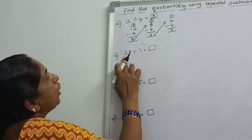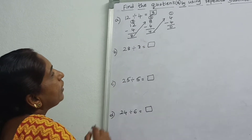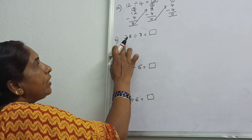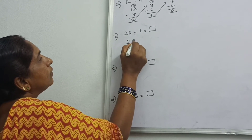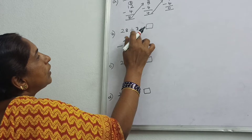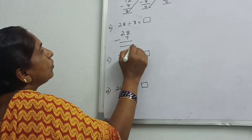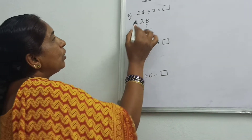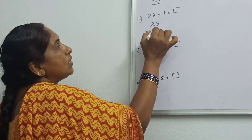Is it clear children? So now the next example: 28 divided by 7. So what is the dividend here? 28. What is the divisor? 7.